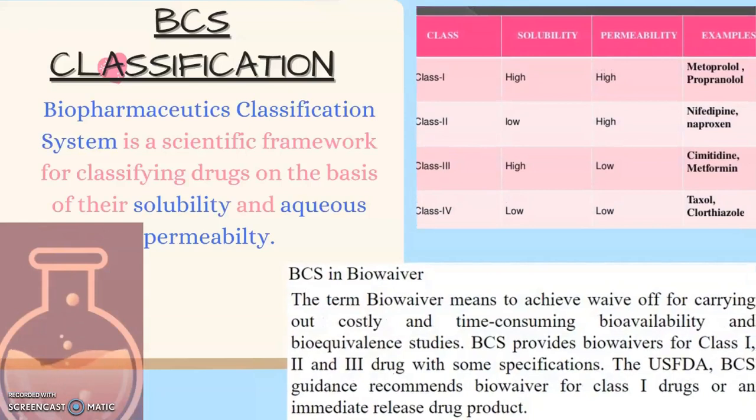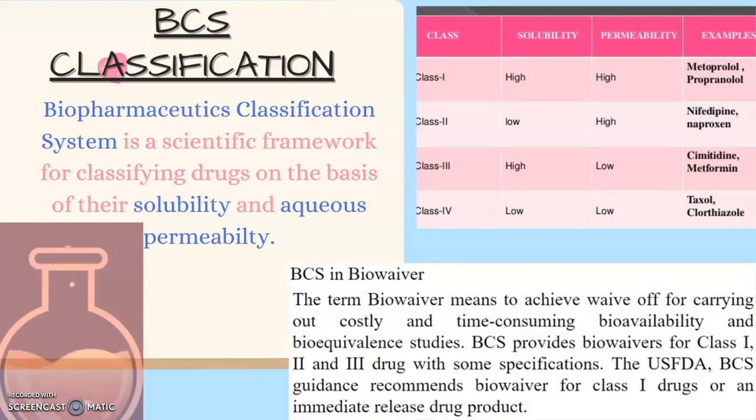Moving on, we have a classification in pre-formulation that is BCS. The full form for BCS is Biopharmaceutics Classification System. It is a scientific framework for classifying drugs on the basis of two parameters: solubility and aqueous permeability. In this classification we have four classes based on solubility and permeability along with their examples. Class 1 has high solubility, high permeability and examples are metoprolol and propranolol. Class 2 has low solubility whereas high permeability and examples are nifedipine and naproxen. Class 3 has high solubility and low permeability and examples are cimetidine and metformin. Class 4 has low solubility and low permeability and examples are taxol and chlorothiazide.